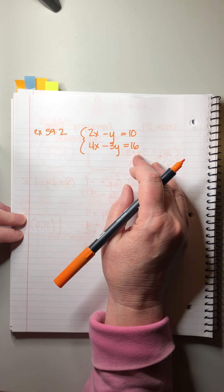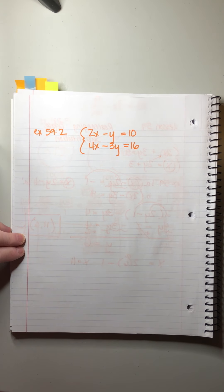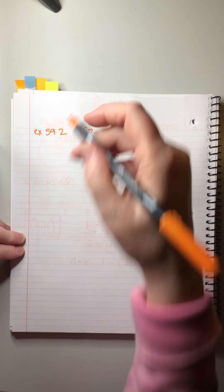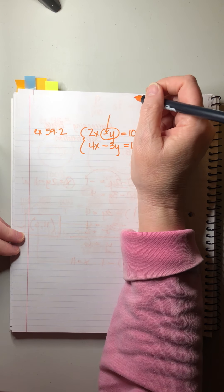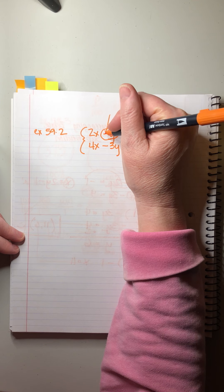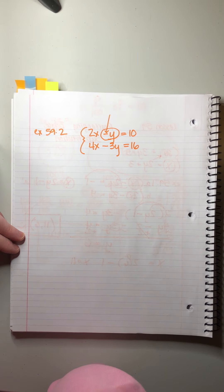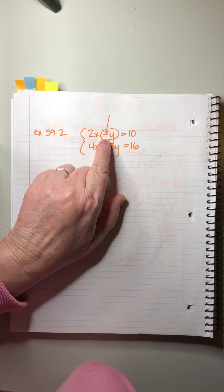Okay. Looking at example two, we're looking for a good way to rearrange this so we can substitute. Again, we look for a letter that doesn't have a number in front of it. There it is — that's the only letter without a coefficient. But there's a minus sign there, and I want to rearrange this so that minus sign goes away.